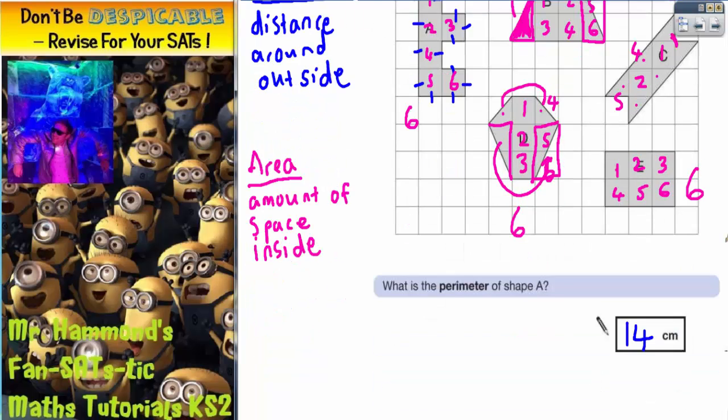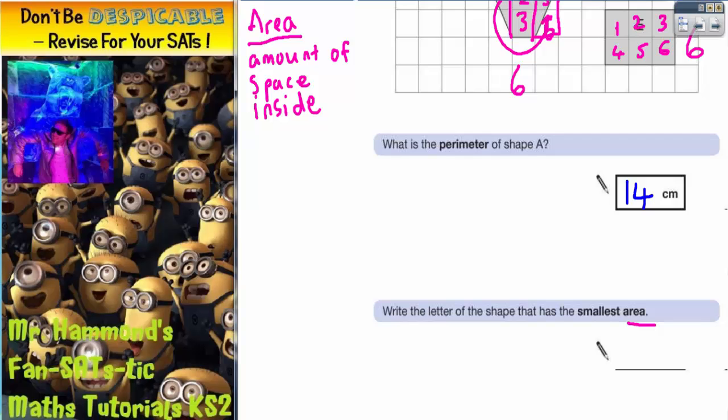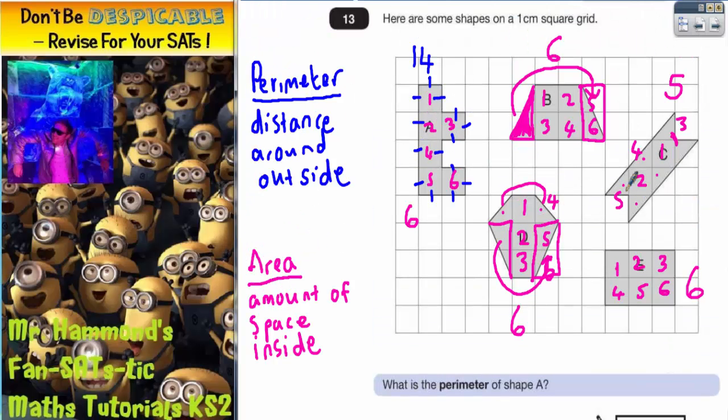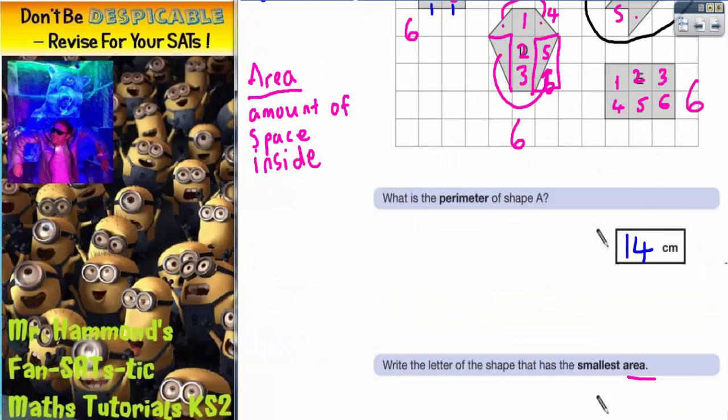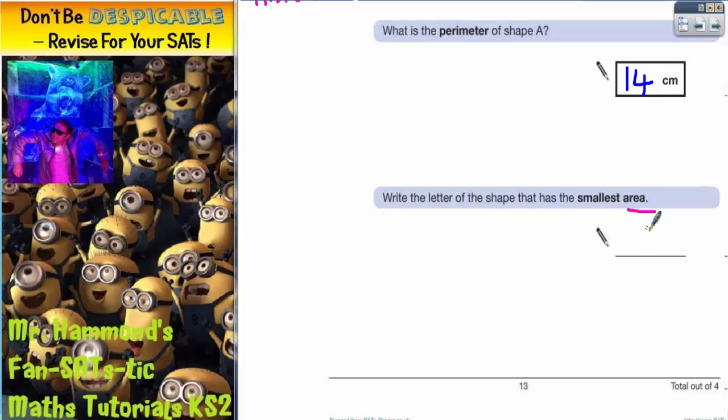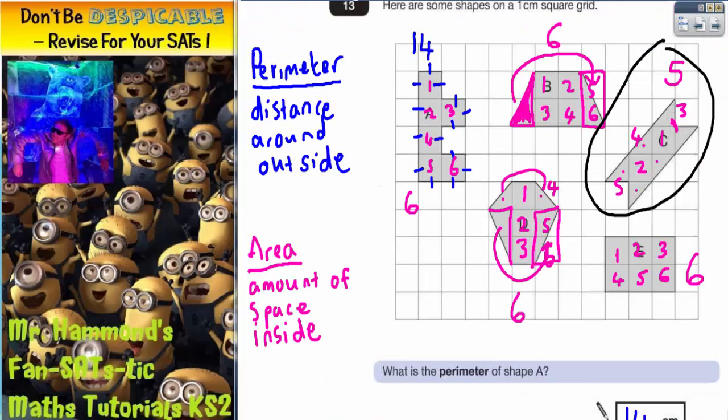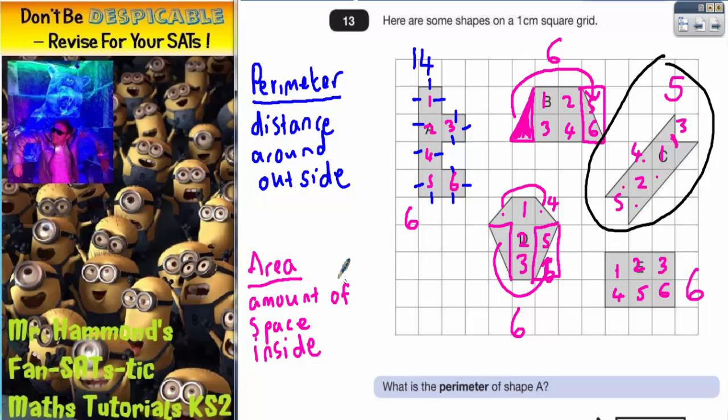So let's have a double check of what we were asked to do. Write the letter of the shape that's got the smallest area. So we've got 6, 6, 6, 6. And the smallest one is 5. And so that is shape C. So C is the letter that I need to write in there. And that's it. That's the question done. So if you just have a quick look back, remember your notes for perimeter and area. Perimeter's distance around the outside. Mark it with each little line with a dash. And area is the amount of space inside. You can actually count whole squares inside.